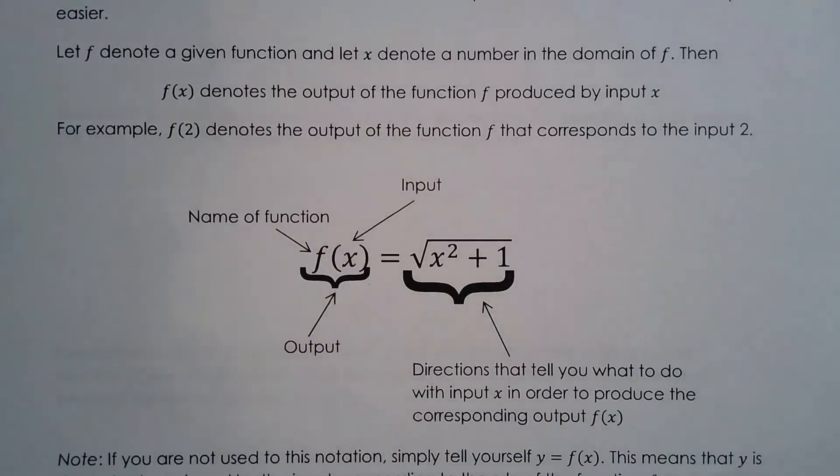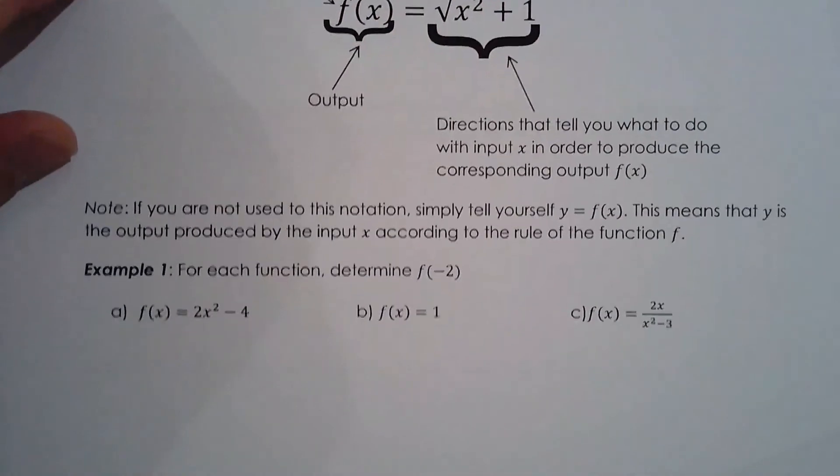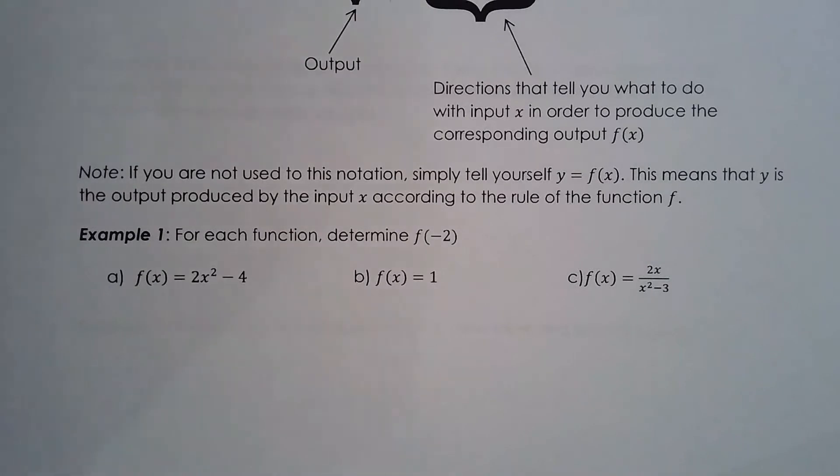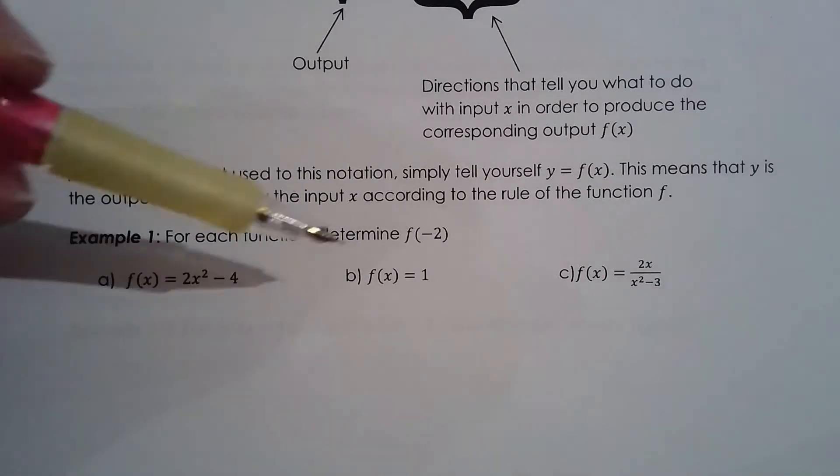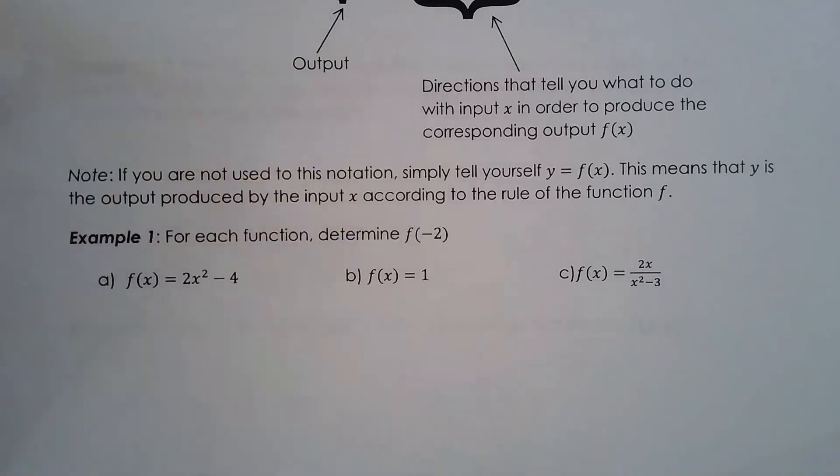So you know what, let's practice. f of x is equal to 2x squared minus 4. So f is the name of the function, f of x the output, x is the input. So they're asking me to find what f of negative 2 is.